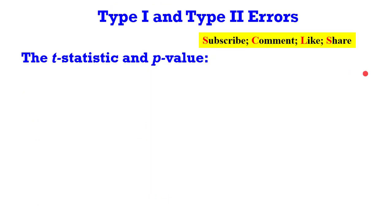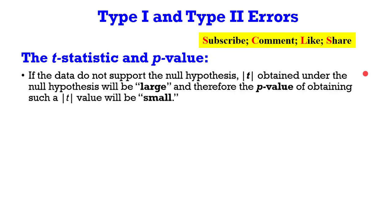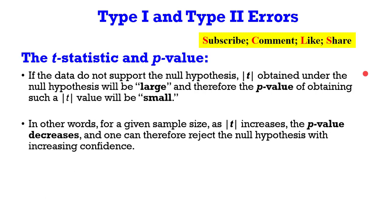Now let's talk about the t-statistic and the p-value. If the data do not support the null hypothesis, the t-statistic obtained under that null hypothesis will be large, and therefore the p-value of obtaining such a t-statistic will be small. In other words, for any given sample size, as your t-statistic increases, you will have a small p-value, which increases the confidence of rejecting the null hypothesis.